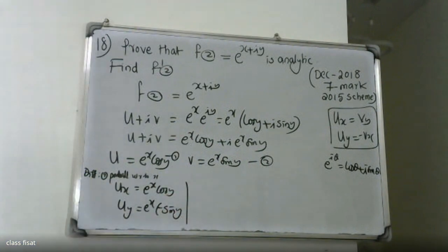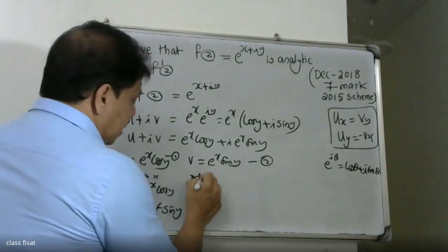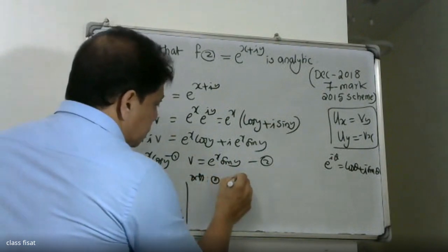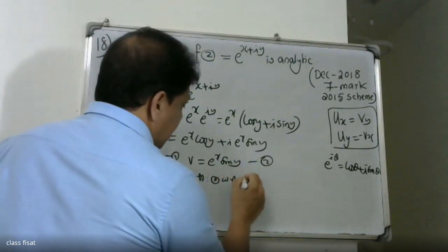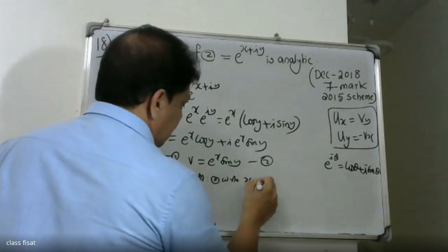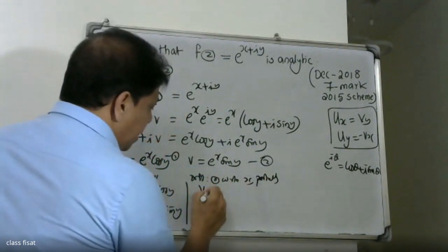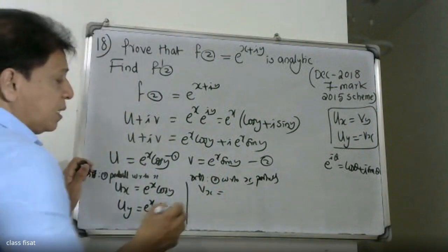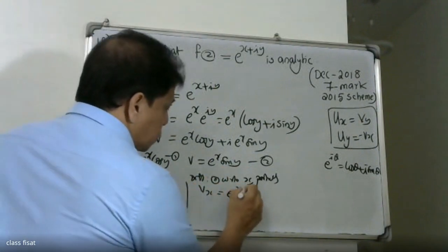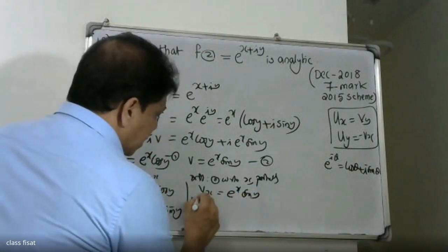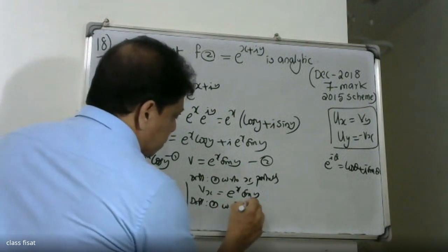Now differentiating equation 2 with respect to x: ∂V/∂x = e^x·sin(y). Differentiating equation 2 with respect to y: ∂V/∂y = e^x·cos(y).